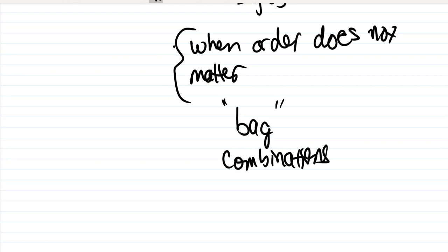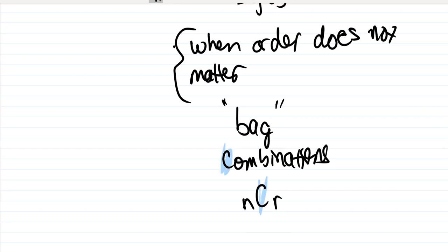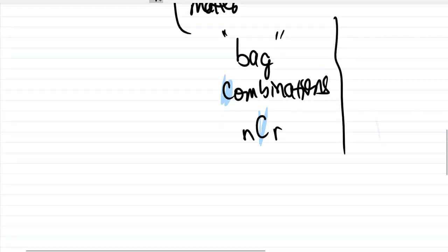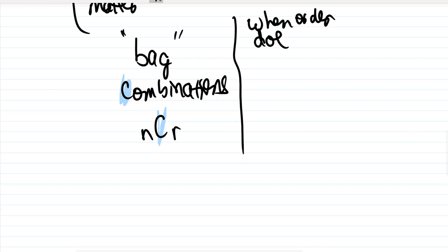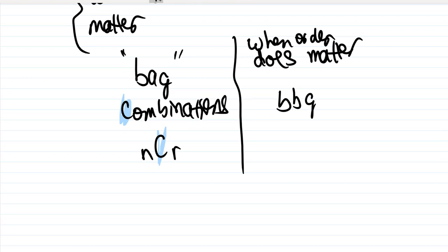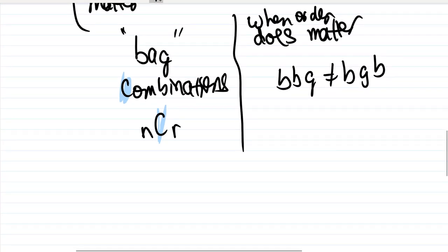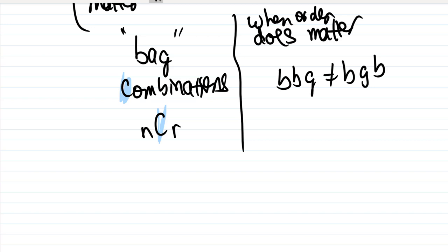There is a formula that will help us work with combinations. When order does matter, it's a different situation. When order does matter, the sequence boy-boy-girl is not exactly the same as boy-girl-boy. We can't look at these as equivalent bags — they're certainly not the same combination. Think of it as a line of people: these are clearly two different lines.